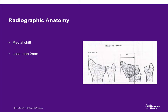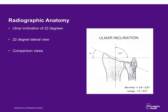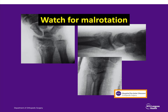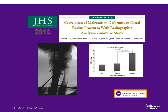Another factor is radial shift—translation of the distal fragment radially—which should be less than 2 millimeters. Excessive radial shift can affect the distal radial joint. On the PA radiograph, the radial inclination is 22 degrees, obtained by drawing a line from the radial styloid to the corner of the radius at the DRUJ and a 90-degree line down the shaft. Comparison views can be helpful. Also look for malrotation, best seen on the PA radiograph as a mismatch of the cortex size.